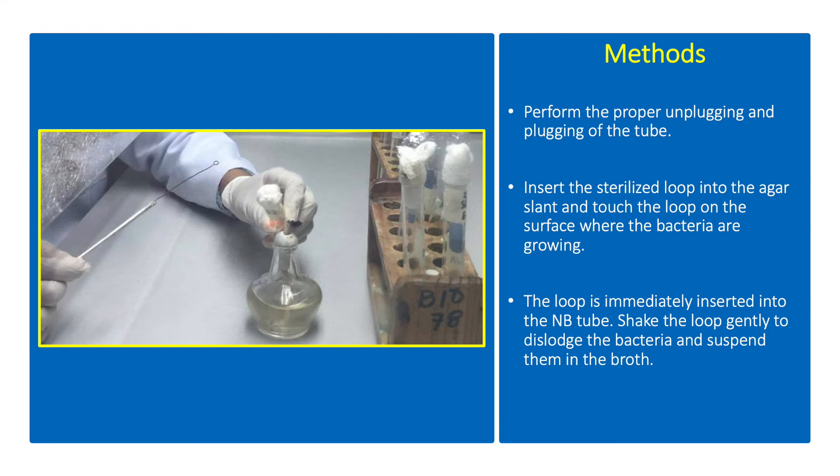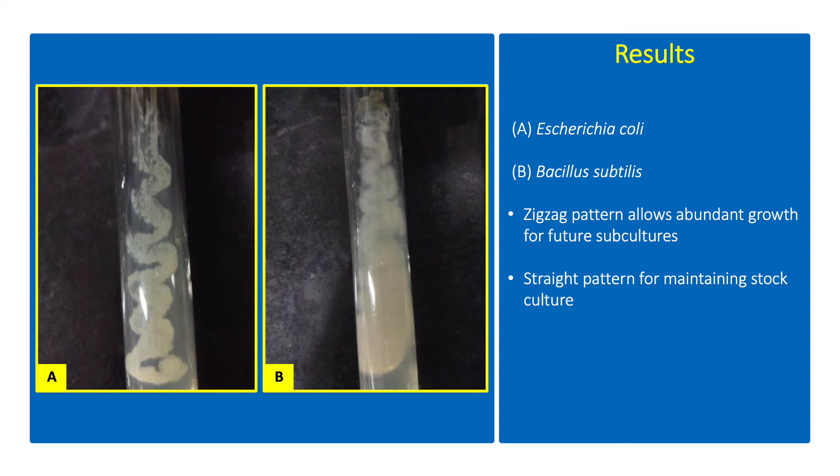Disinfect the laminar flow hood after use. These are the results showing the zigzag growth of E. coli and B. subtilis on NA slants. Zigzag pattern allows for abundant growth ideal for subculturing. A straight pattern is ideal for maintaining stock culture.